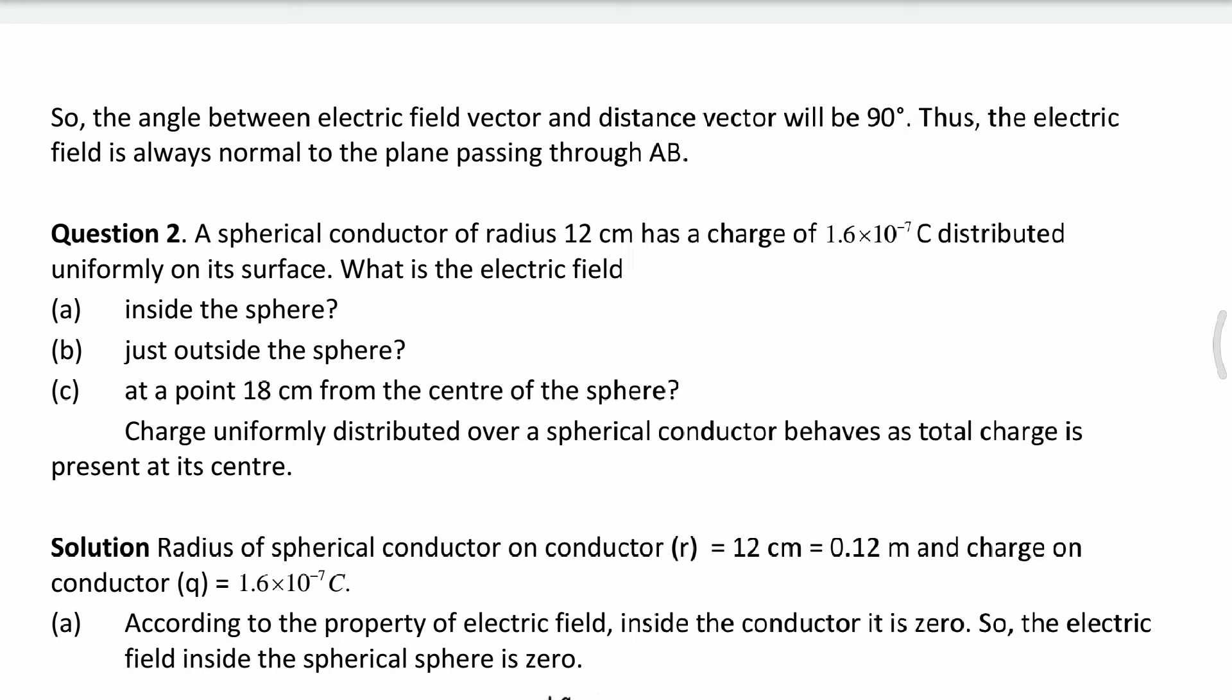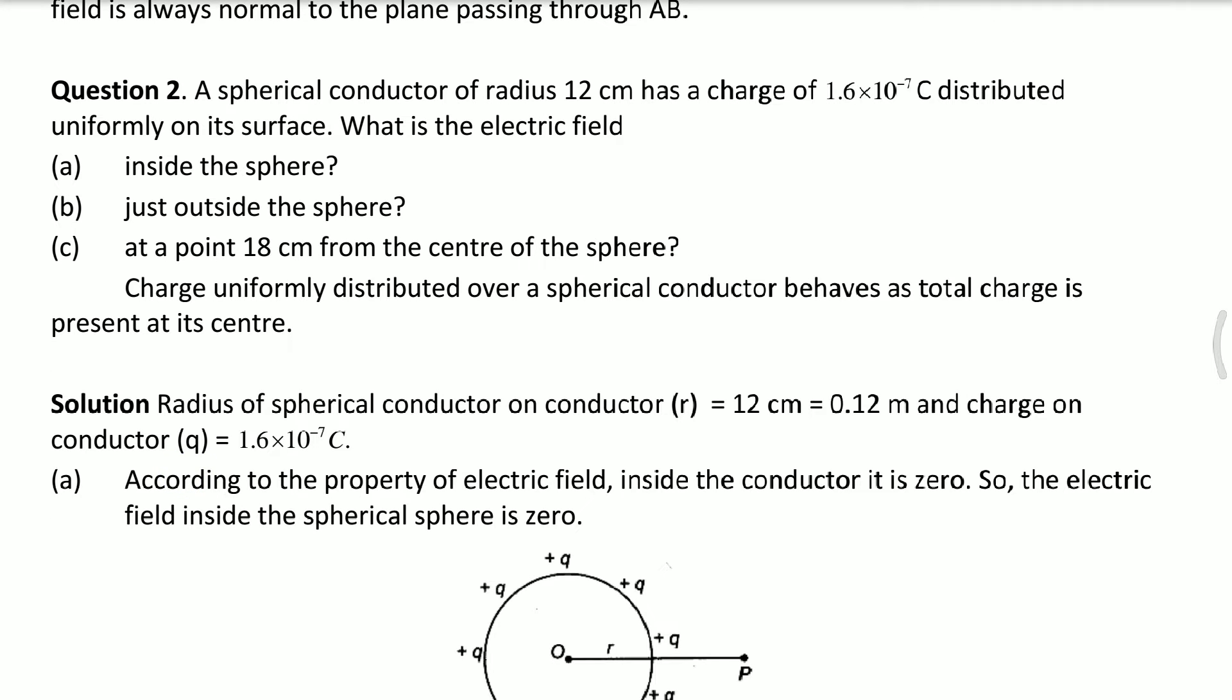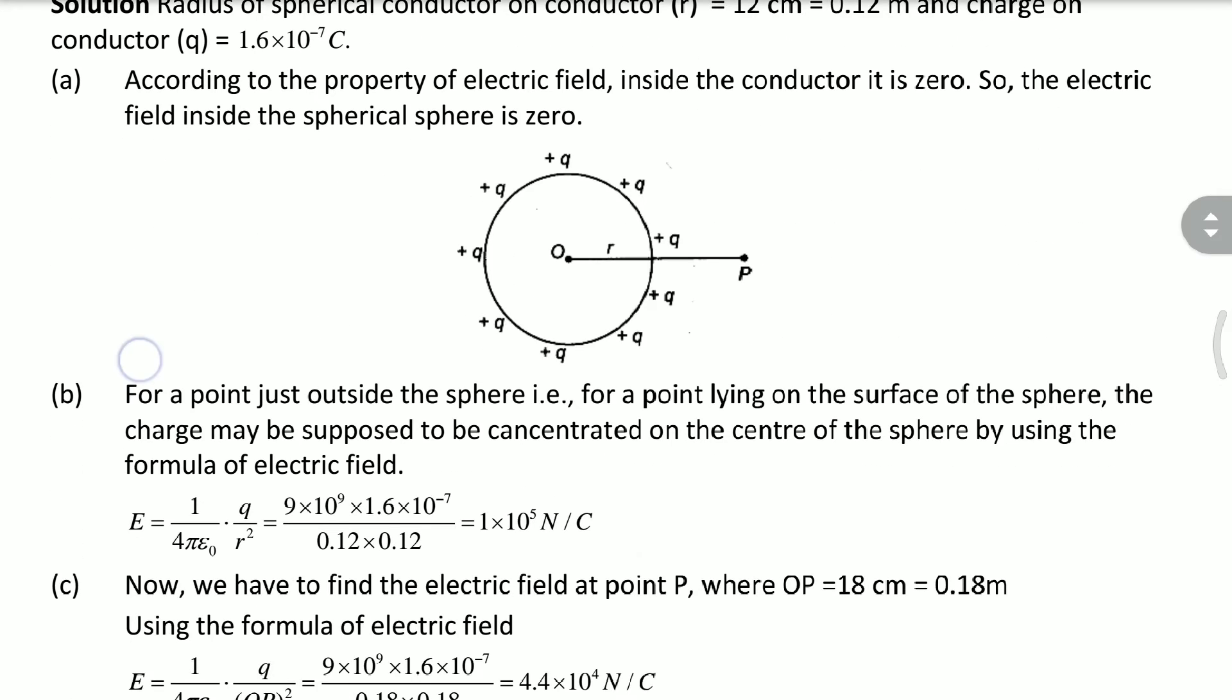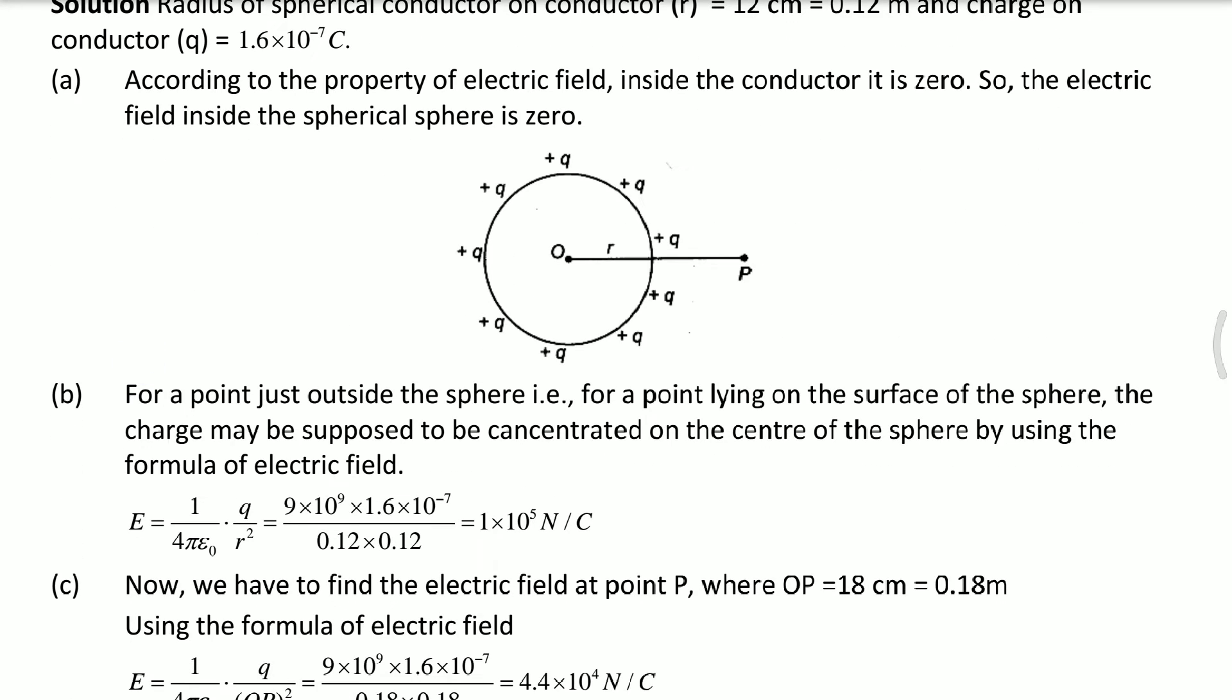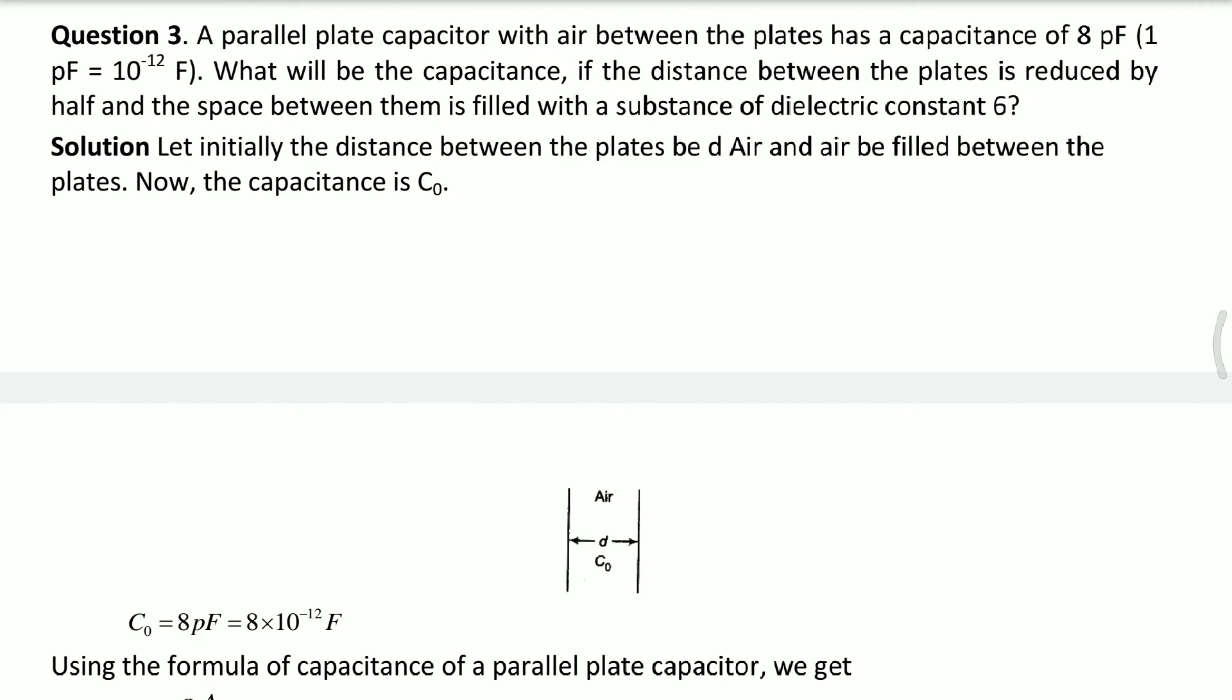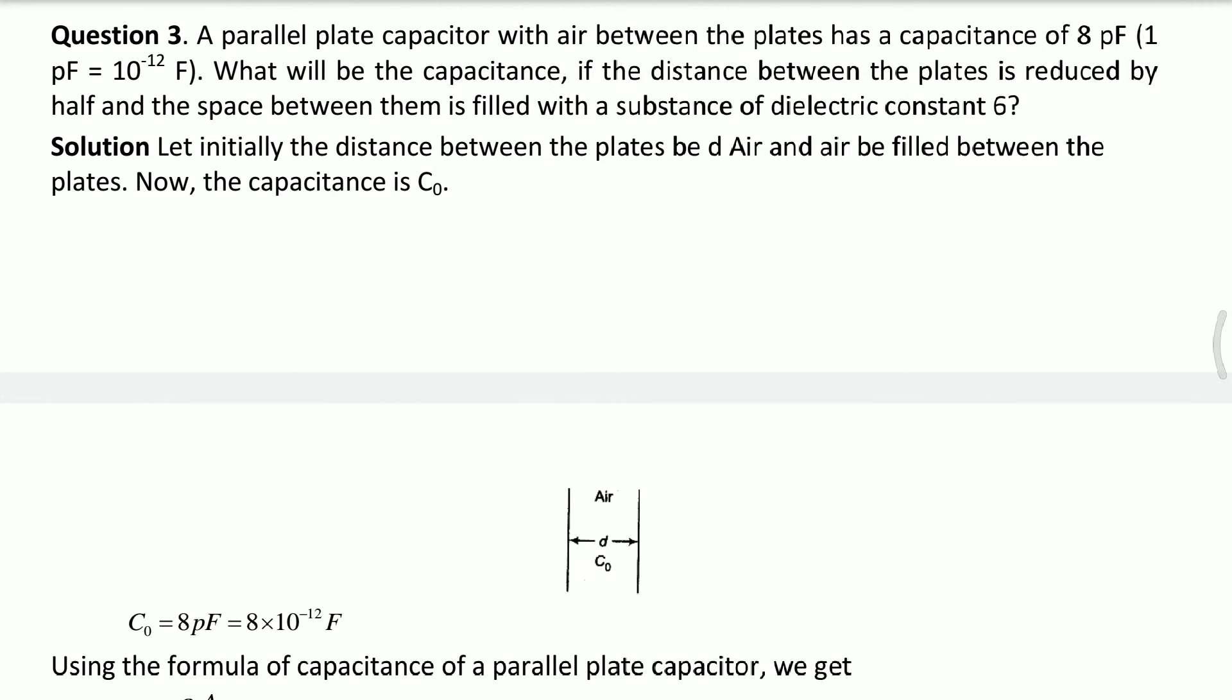A second question: a spherical conductor of radius 12 centimeter has a charge of 1.6 into 10 raised to power minus 7 coulomb distributed uniformly on its surface. What is the electric field inside the sphere, just outside the sphere, at a point 18 centimeter from the center of the sphere? These questions are very important in your examination.